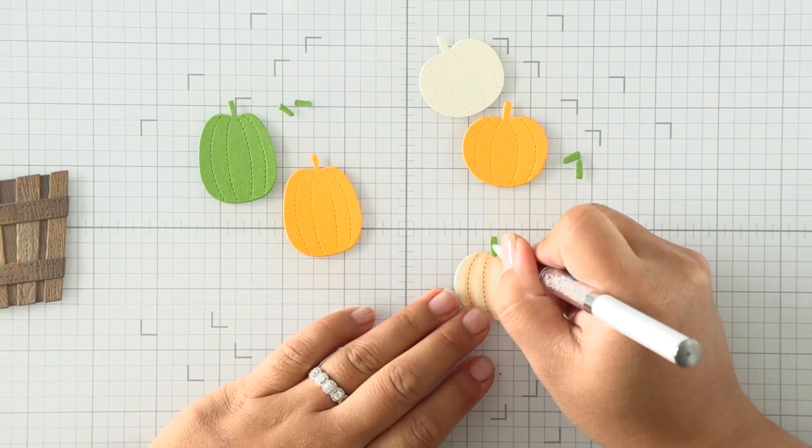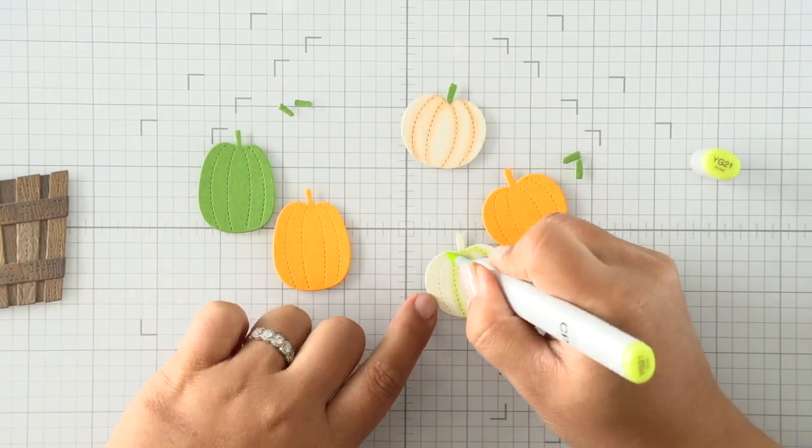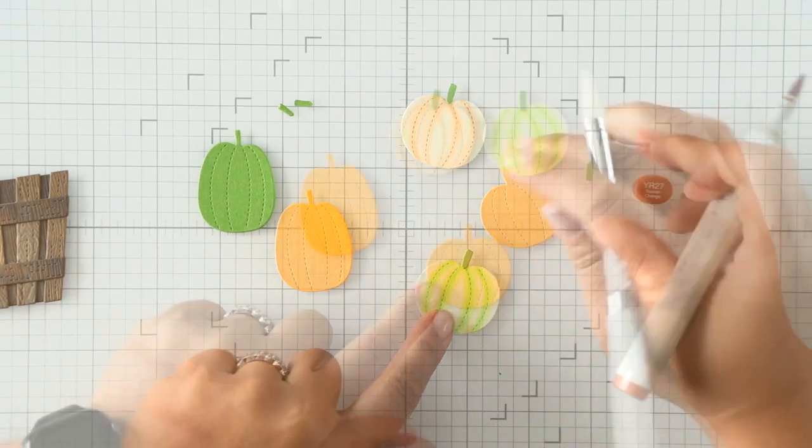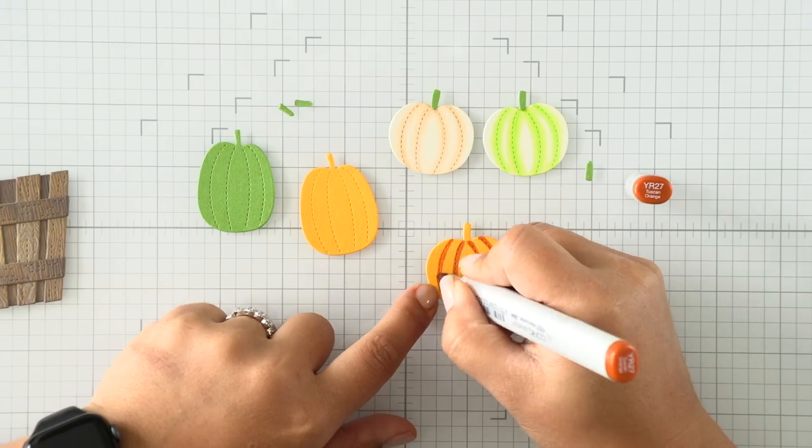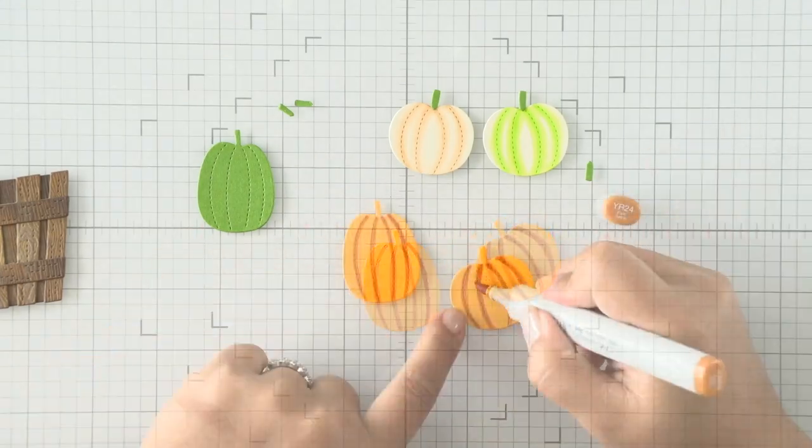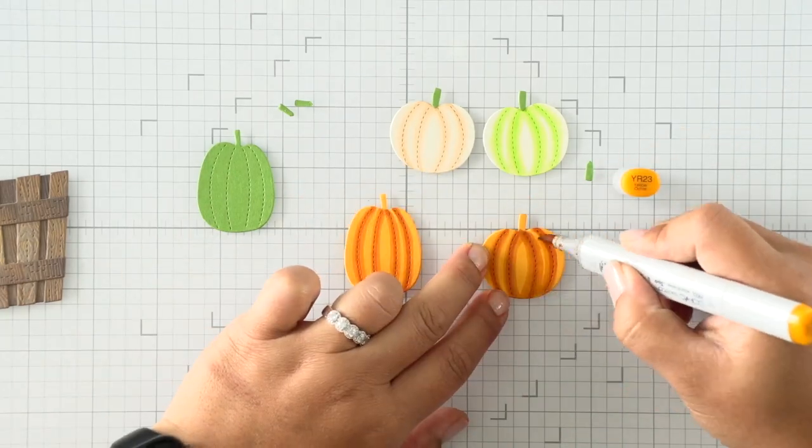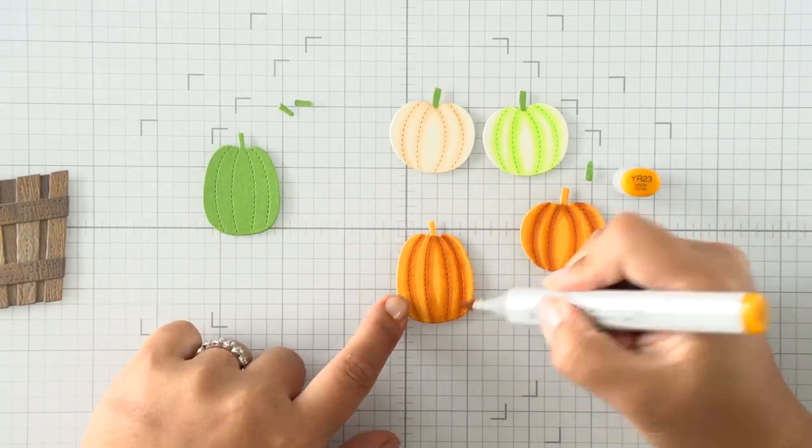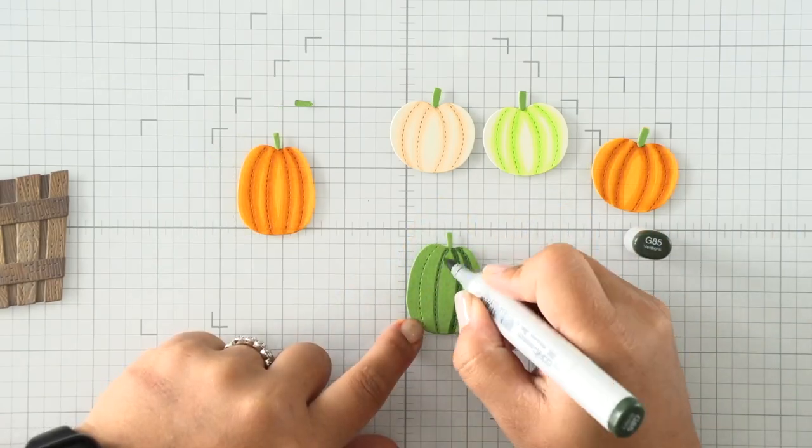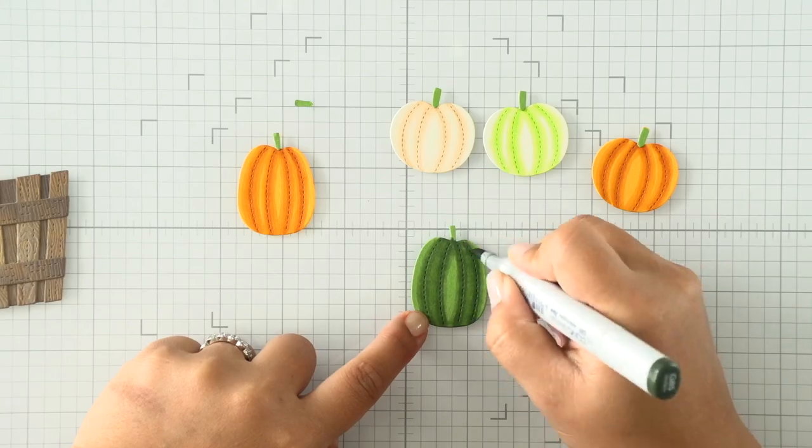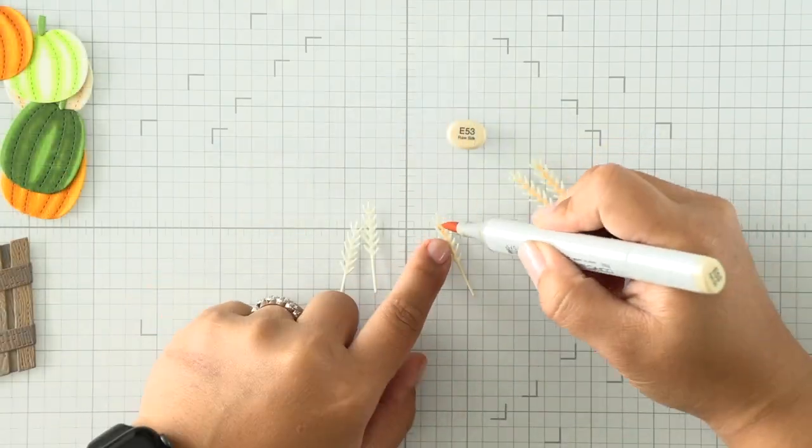I'm starting my coloring here with some pumpkins that I've die cut in a few different colored cardstocks. I'm using different Copic markers to color them to add some depth in between those curvatures on the pumpkins and the creases. You'll notice that it's not perfect - coloring with Copic markers on cardstock is a little different because you don't see it right away until the ink dries.